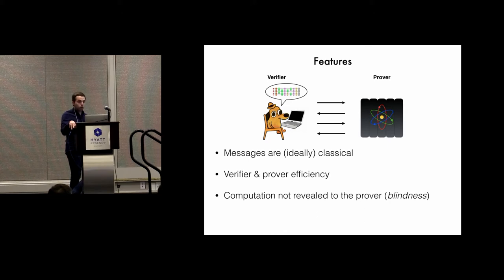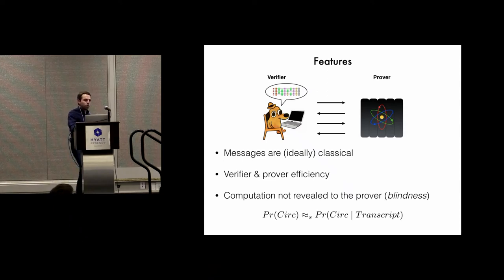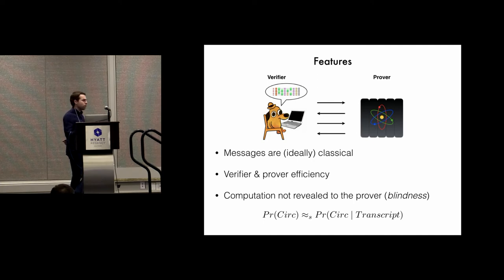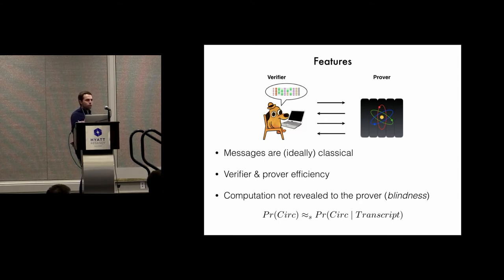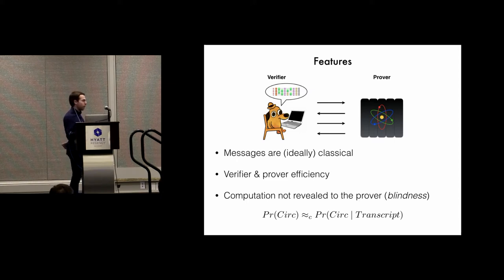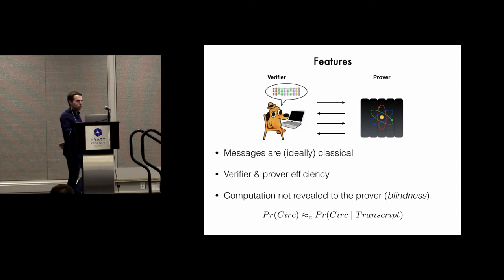A property that you might want if you care about privacy is known as blindness, and roughly this means that the computation of the quantum circuit will not be revealed to the prover throughout the interaction. More formally, if you imagine a probability distribution over all circuits of the same size, then after interacting with the verifier, the prover's conditional distribution after seeing the transcript should be roughly the same as the original prior distribution on the circuits — close in total variation distance. This is information-theoretic blindness, but what we'll actually achieve is computational blindness, where the two distributions are merely computationally indistinguishable for all polynomial-time quantum algorithms.